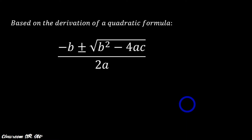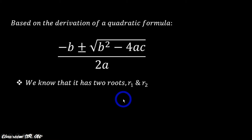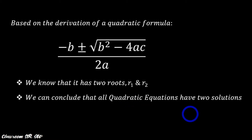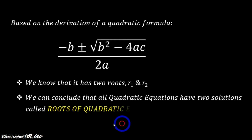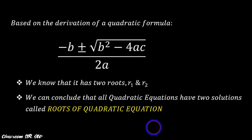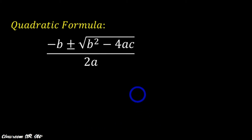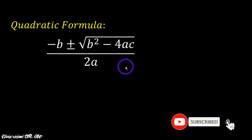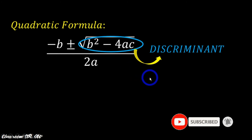We know that from the quadratic formula, it has two roots, R1 and R2. We can also conclude that all quadratic equations have two solutions called the roots of the quadratic equation. Now, from the quadratic formula, the expression inside the radical symbol is what we call the discriminant.